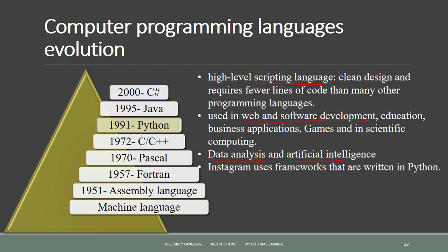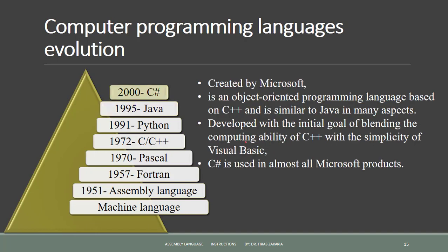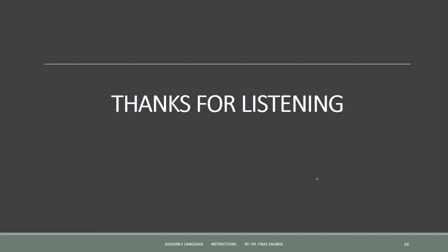Python is used by organizations like Wikipedia, Google, Facebook, Amazon, and Instagram, and some video games also use Python. Java is the most popular programming language — it is an object-oriented language with automatic memory management, used in almost every aspect of development. C#, created by Microsoft, is an object-oriented language based on C++ and very similar to Java. It was developed to blend the computing ability of C++ with the simplicity of Visual Basic, and is used in almost all Microsoft products.